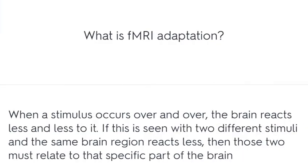What is fMRI adaptation? When a stimulus occurs over and over, the brain reacts less and less to it. If this is seen with two different stimuli and the same brain region reacts less, then those two stimuli must relate to that specific part of the brain.